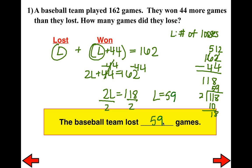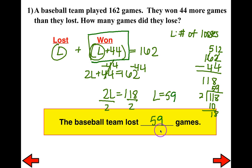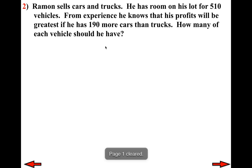Now, if they asked how many wins the team had, I would use L + 44 — taking the number of losses, which was 59, and adding 44 would tell me how many wins they experienced as well. Go ahead and pause the video and give number two a shot.